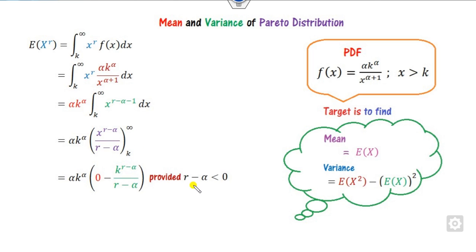So we can say it is 0 when r minus alpha is less than 0. Otherwise it is infinity, and when you substitute k, it is r minus and so on. Now you can multiply them. This is k raised to power alpha. When you multiply them, k alpha will be cancelled out. So this is alpha k raised to power r upon alpha minus r provided alpha is less than r.